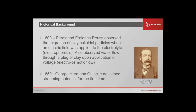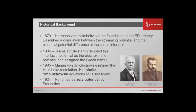This was one of the first times they actually saw the movement of material as a result of charge, or charge causing movement of material. In 1859, they coined the term streaming potential. In 1879, Helmholtz set the electrochemical double layer theory, trying to describe a correlation between the EDL and streaming potential. Jean-Baptiste assigned the Greek letter Zeta to it. Smoluchowski refined the equation, and it's now known as the Helmholtz-Smoluchowski equation. In 1924, it was formally renamed as Zeta potential.